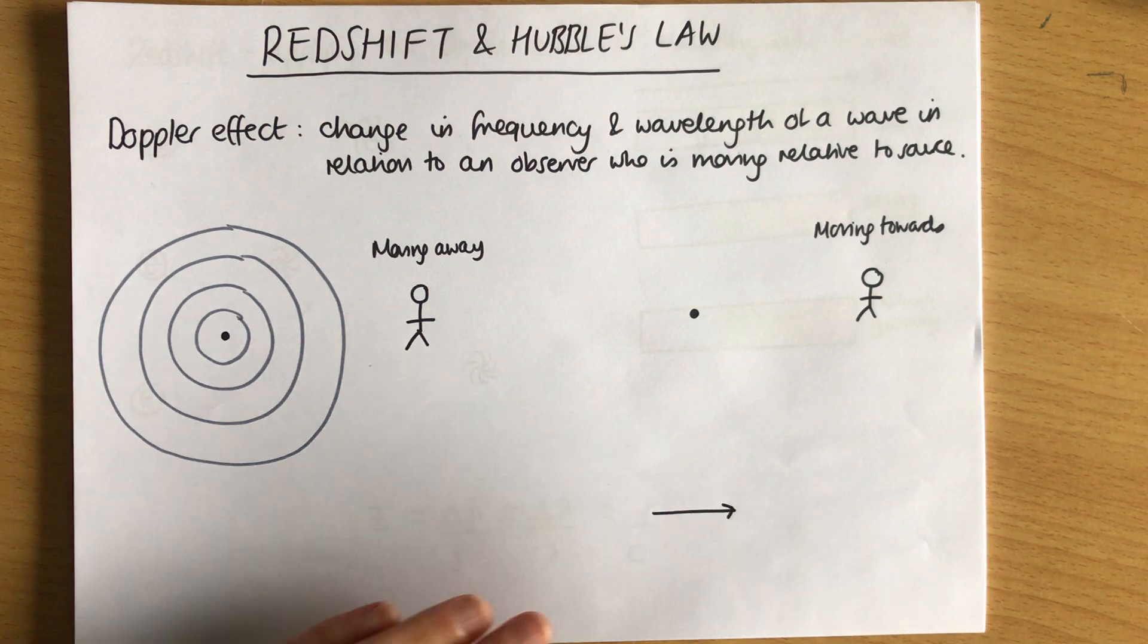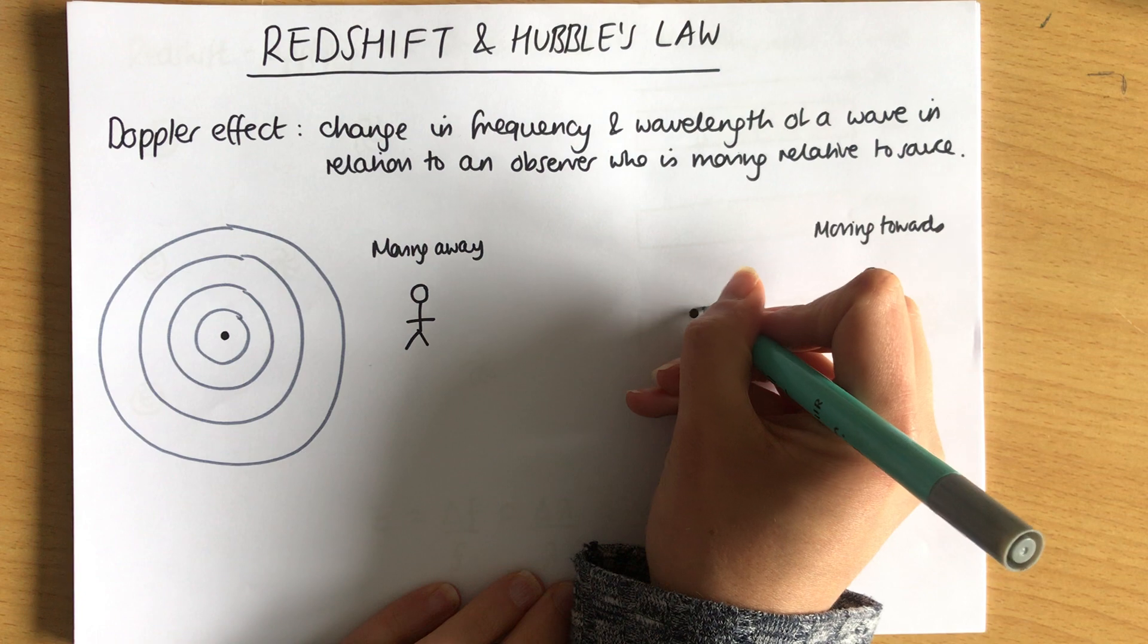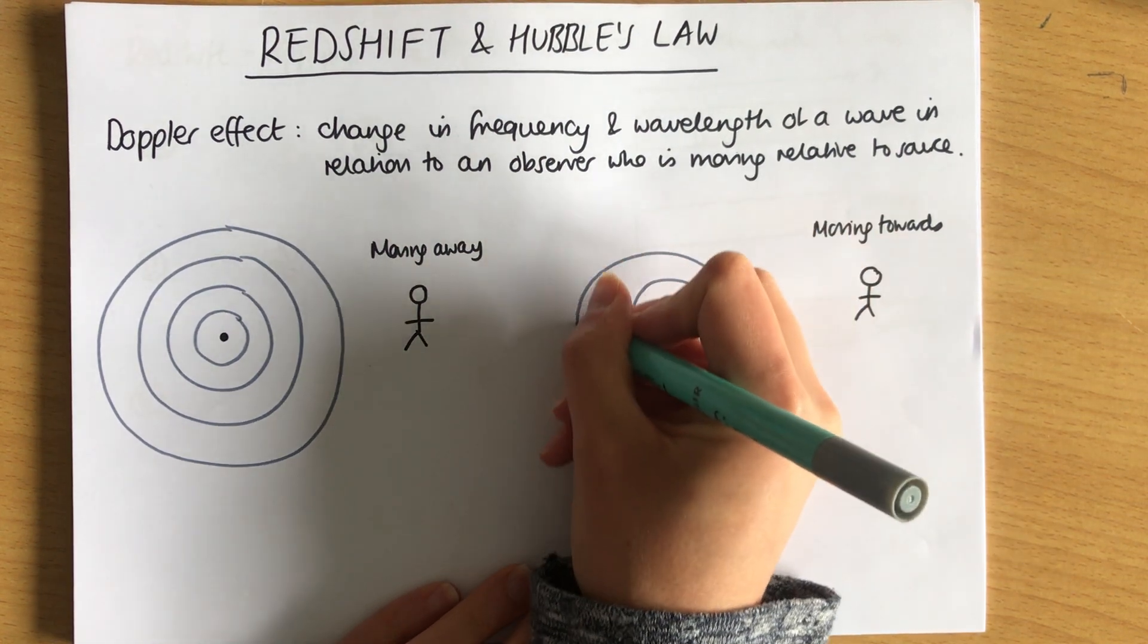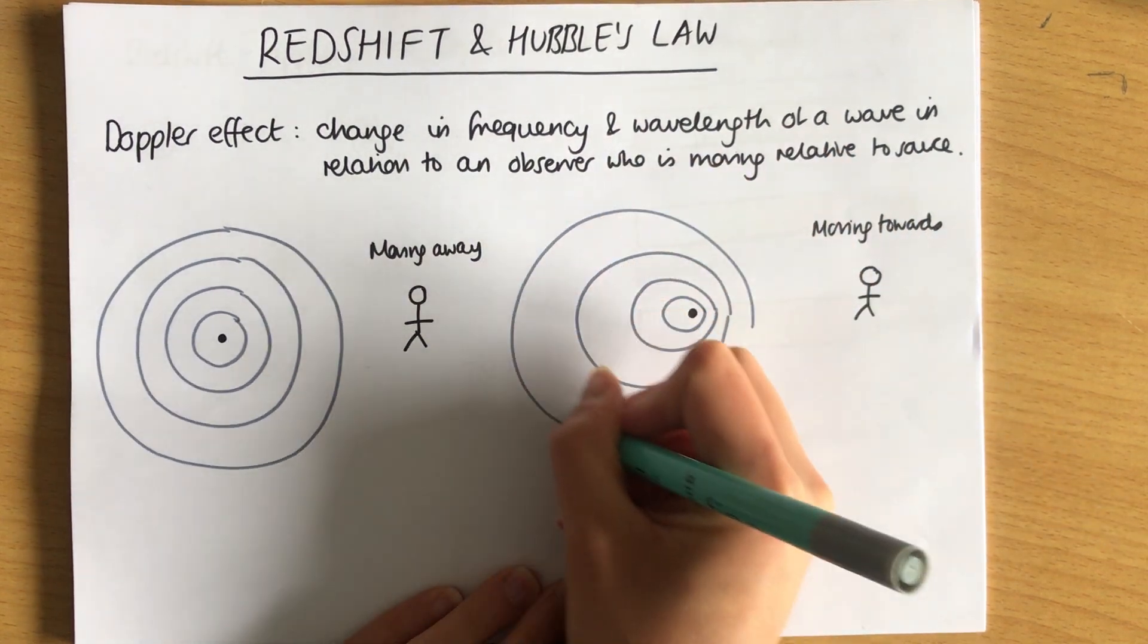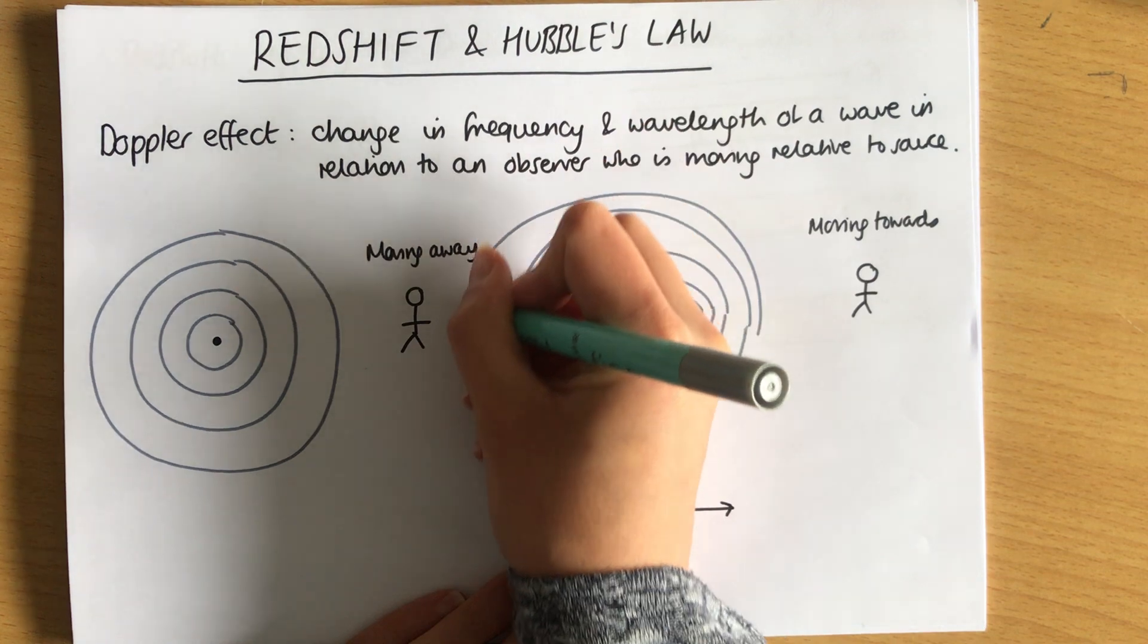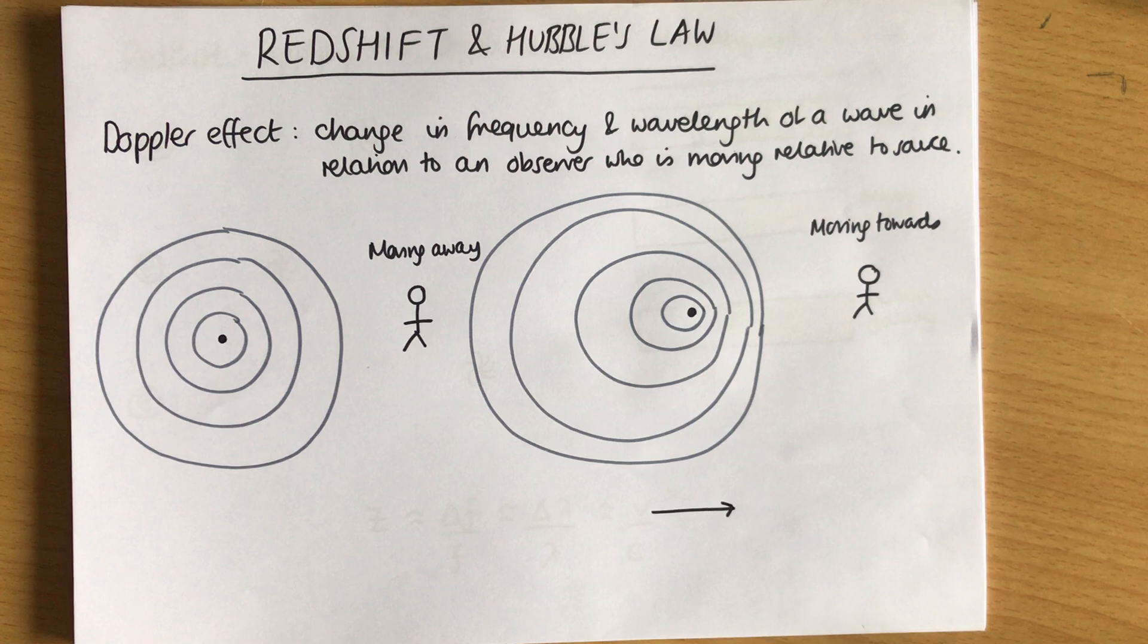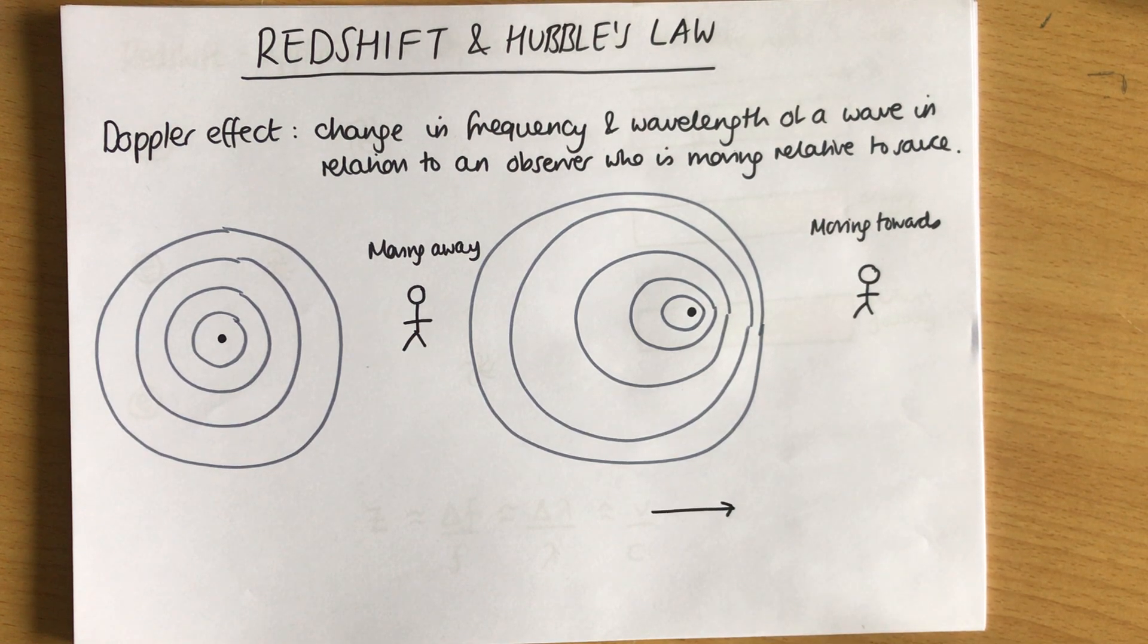But if that object was moving this way I'd see this pattern happening to my ripples. Now a really common example of this is when you've got a motorbike or an ambulance or something with a siren. As it goes past it's emitting waves and it's moving either towards you or away from you. And as it goes away from you you'll hear that Doppler effect sound. Or an aeroplane might do it as it goes overhead.